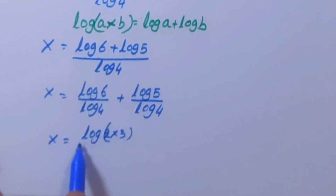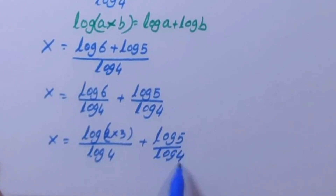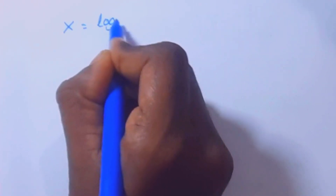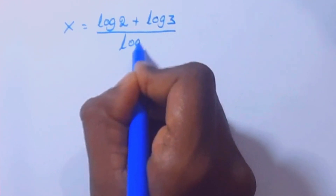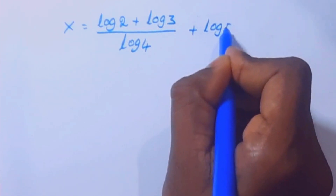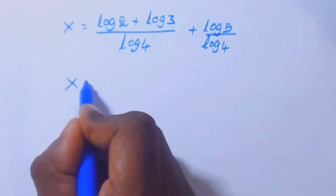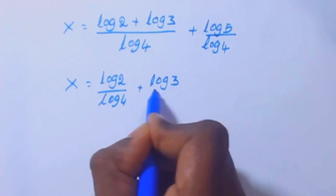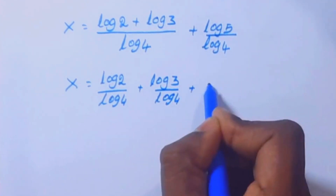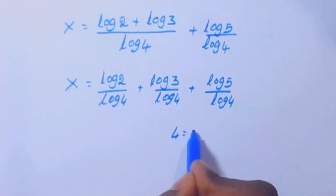Continuing, we expand log 6 as log 2 plus log 3, giving x equal to log 2 plus log 3 by log 4 plus log 5 by log 4. Now this log 4 can be written as log 2 squared.